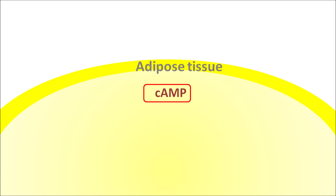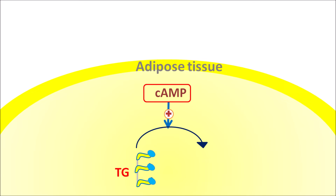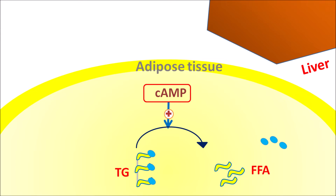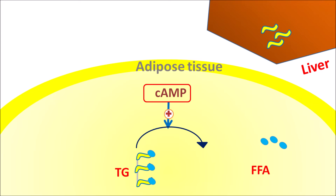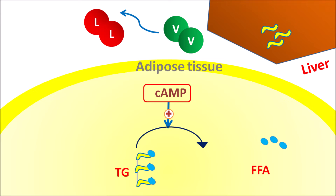Within the adipose tissue, cyclic AMP plays an important role in controlling the metabolism of triglycerides. Triglycerides are converted into free fatty acids and glycerol in the presence of cyclic AMP. These free fatty acids are taken up by the liver, stored into VLDL, and released into the bloodstream. VLDL is then converted into LDL. Increased lipolysis within adipose tissue therefore results in increased production of VLDL and LDL.